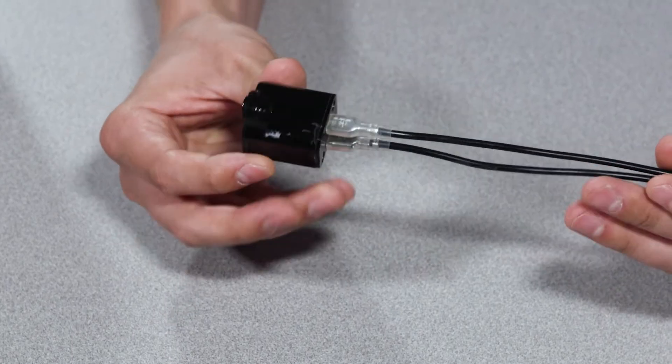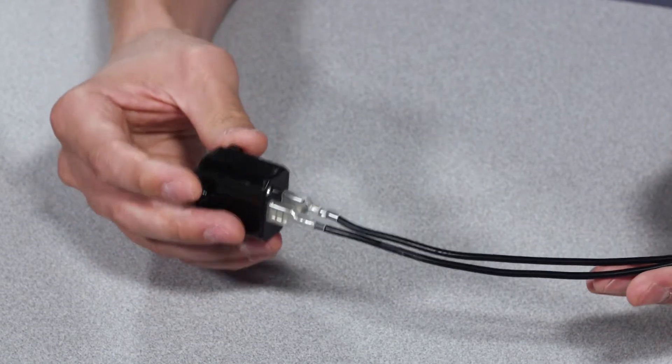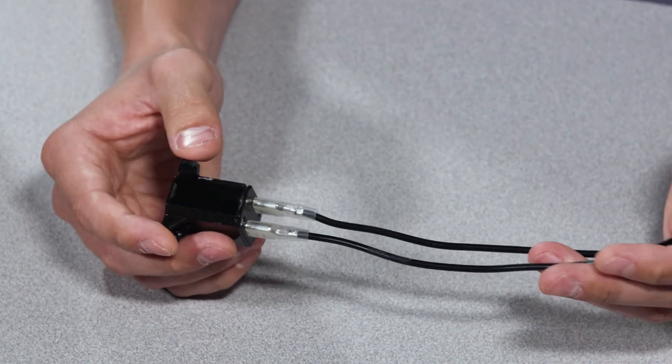If you find one of these parts bad or open with an ohmmeter, you want to replace it with a PTCR and not a traditional hard start kit.